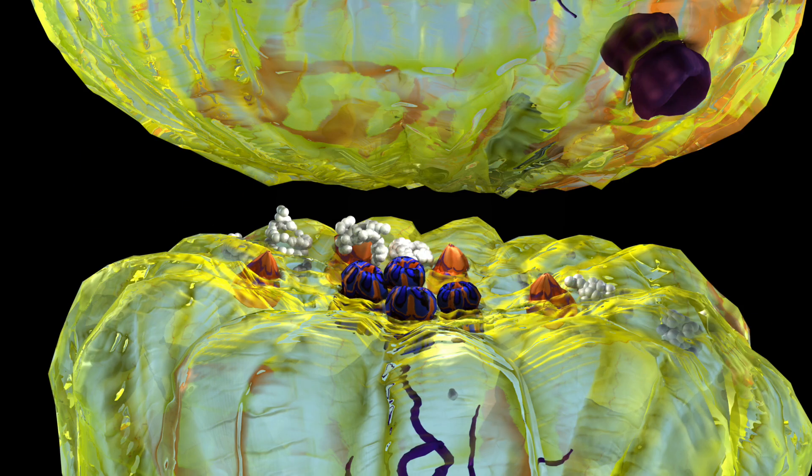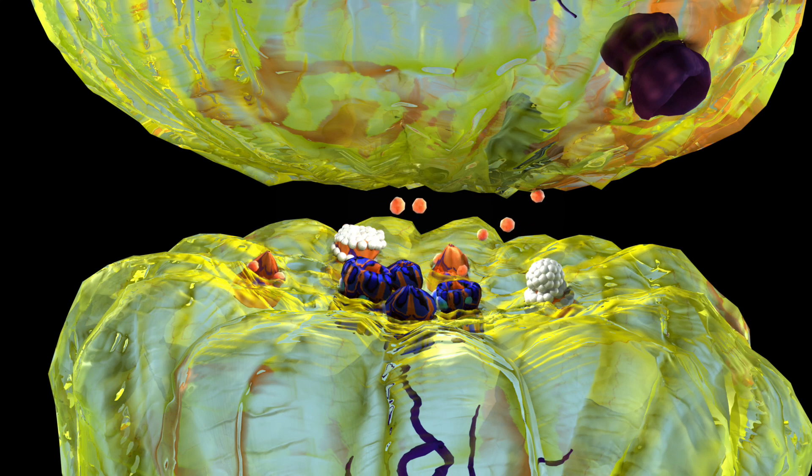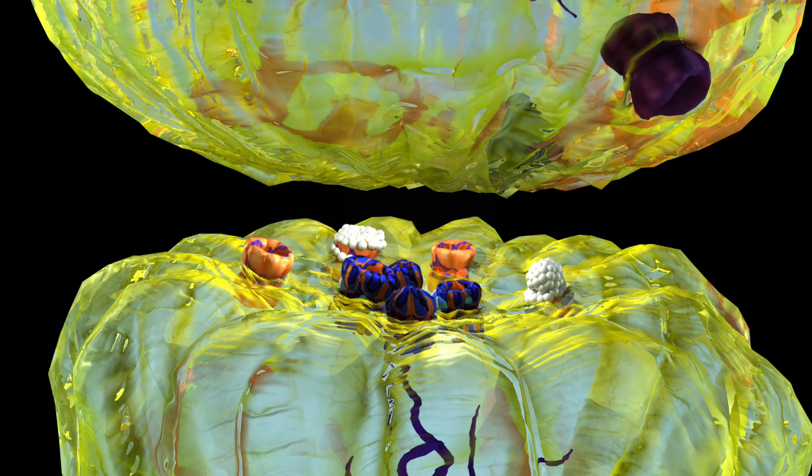Muscarinic receptor antagonists will bind to the muscarinic receptor and block acetylcholine from binding to them. This causes a more stabilized balance between dopamine and acetylcholine.